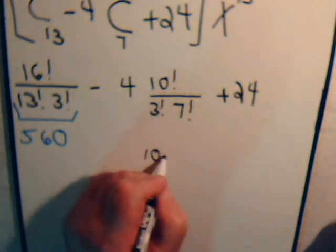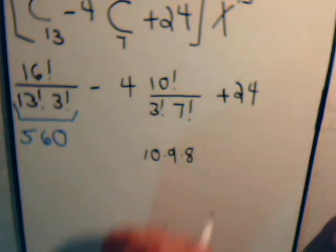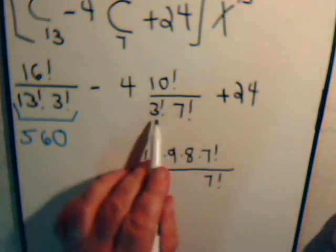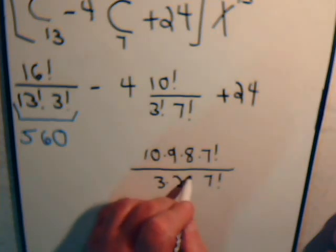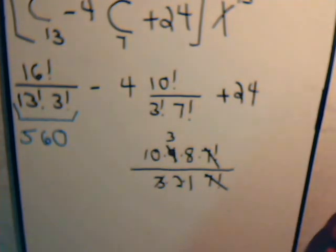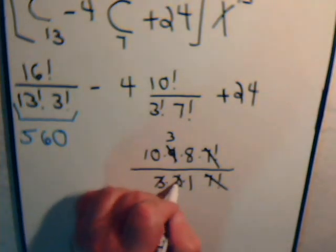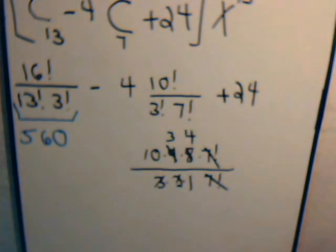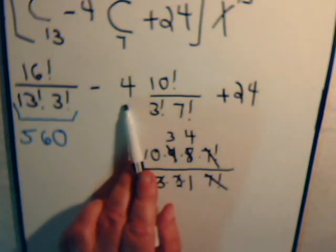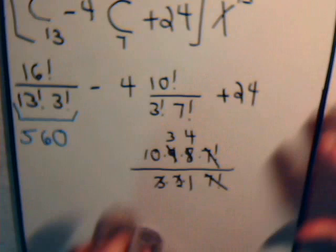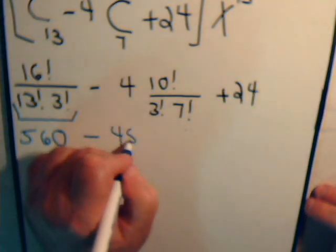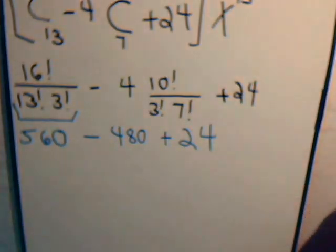That's 560 and what do we have from here? We have 10 times 9 times 8 times 7 factorial divided by 7 factorial times 3 times 2 times 1. Those cancel. That goes into there 3 times and this goes into there 4 times. So we have 4 times 3 is 12 times 10. That's minus 4 times 120, that's minus 480.